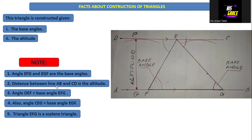Distance between line AB and line CD is the altitude. That is, these two lines are parallel to each other.